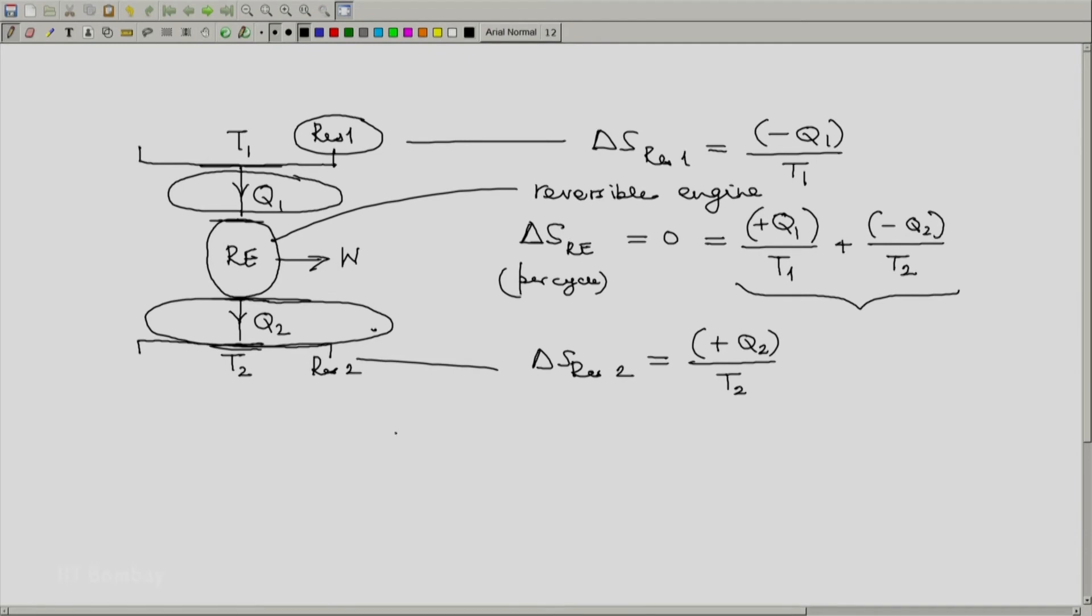So generalizing this, we should note this general case that delta S of a TER or thermal energy reservoir is defined as the heat absorbed divided by the temperature of the thermal energy reservoir.